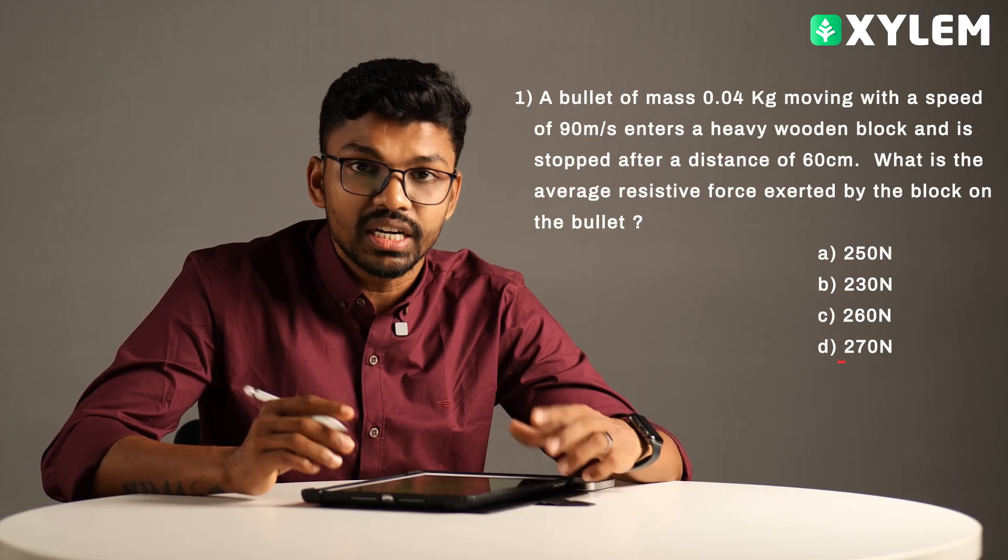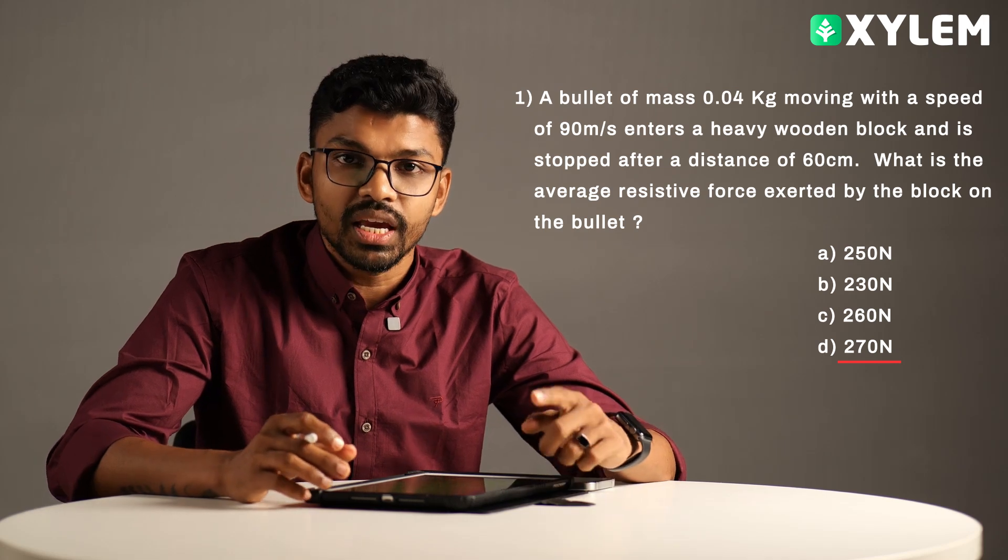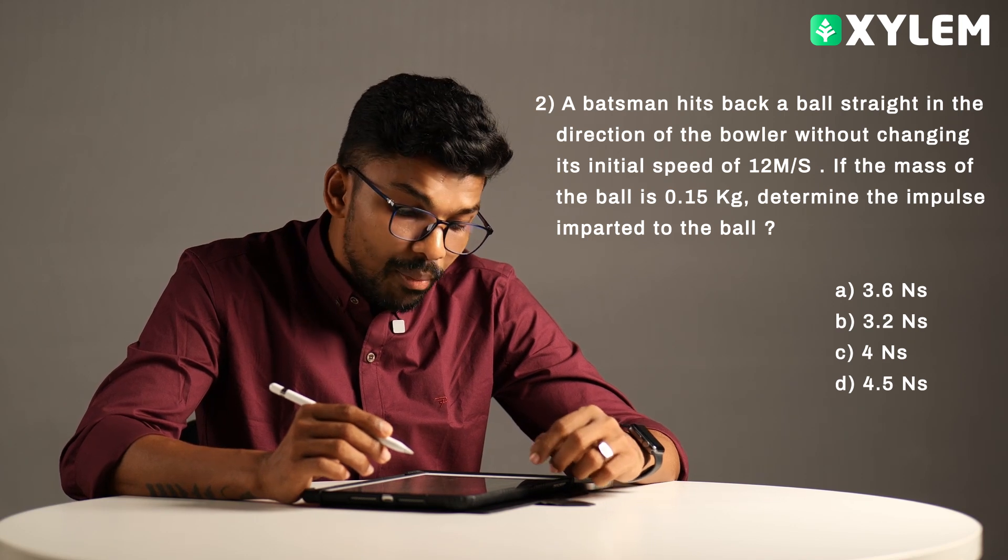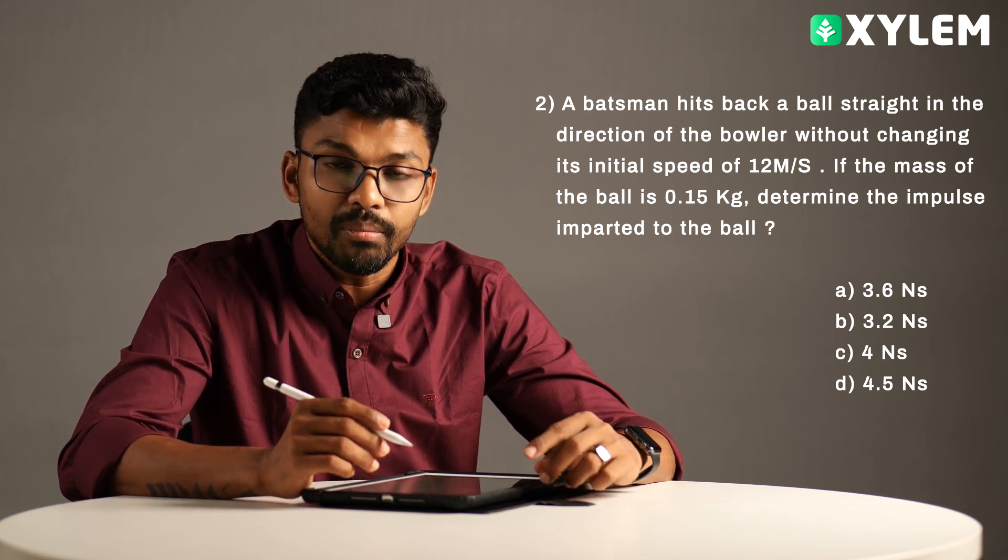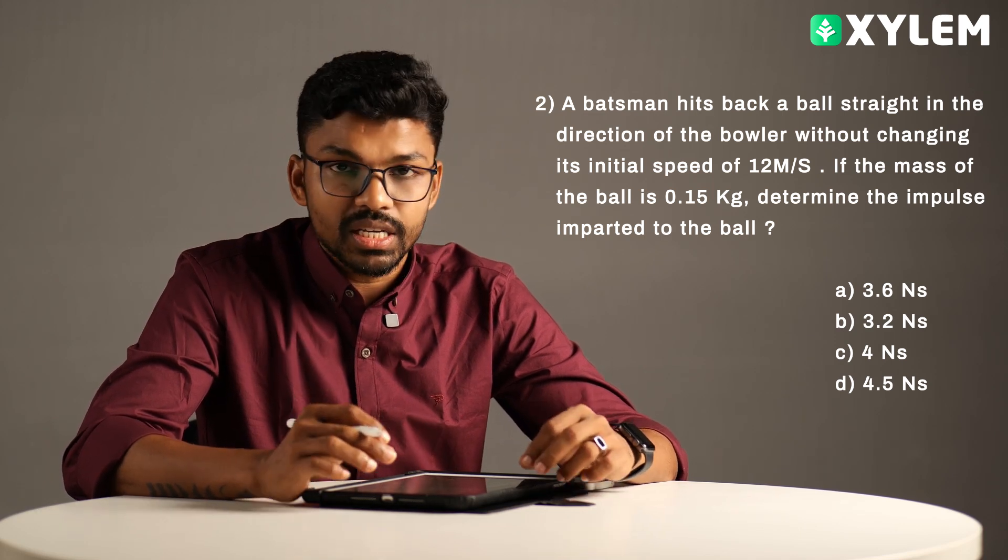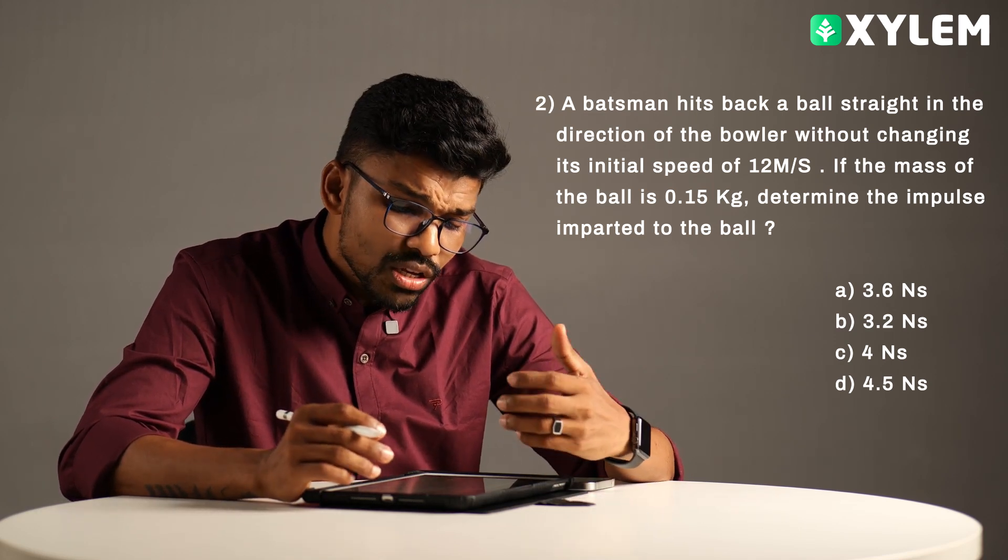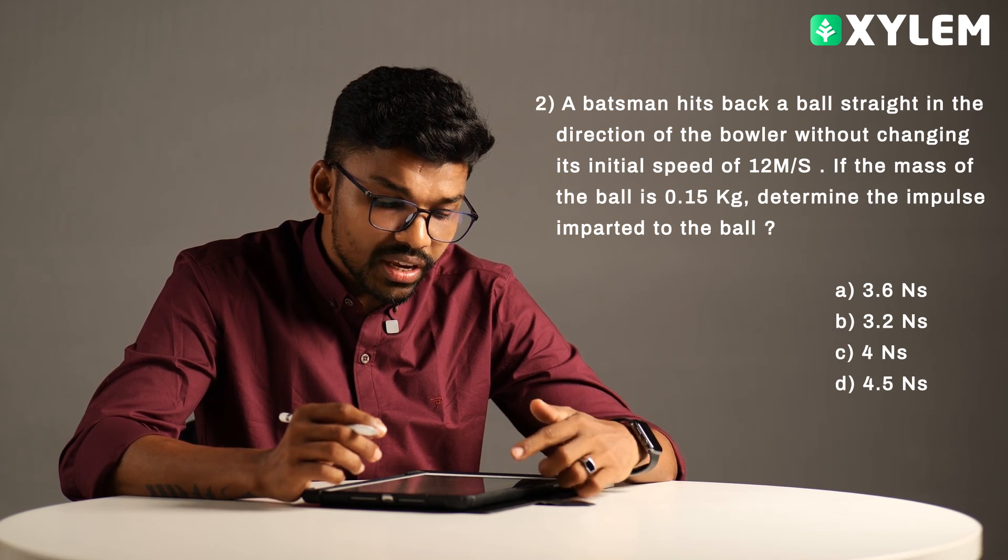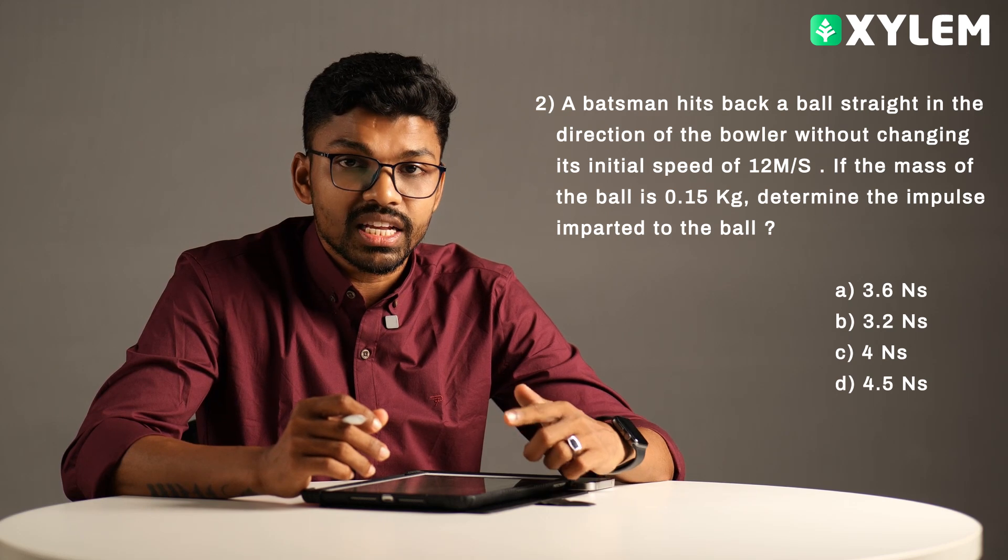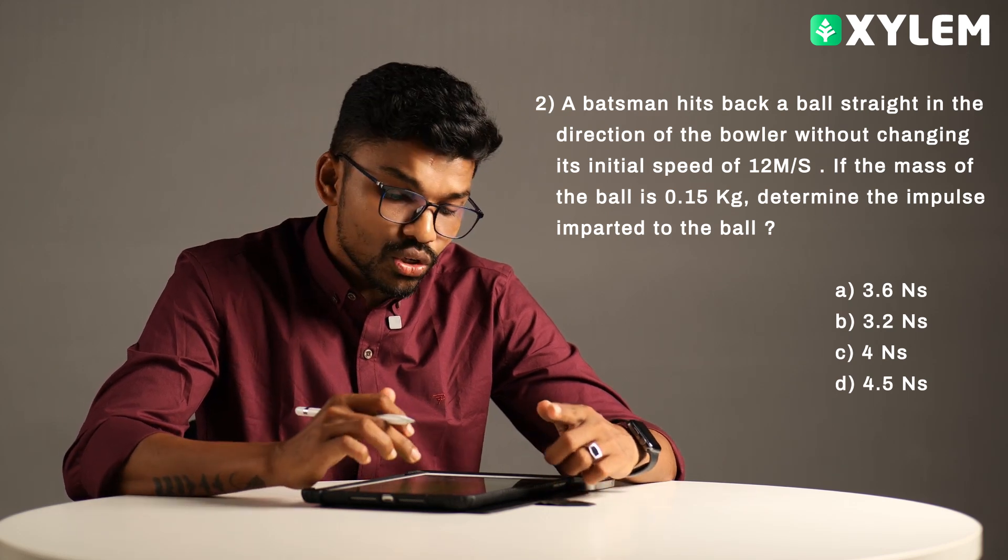F is equal to 270 newton, option B. Easy to pick. Moving to the next question. Question: A batsman hits back a ball straight in the direction of a bowler without changing its initial speed of 12 meter per second. Its mass of the ball is 0.15 kg. Determine the impulse imparted.